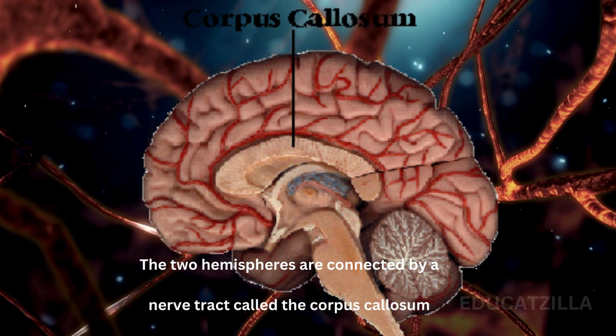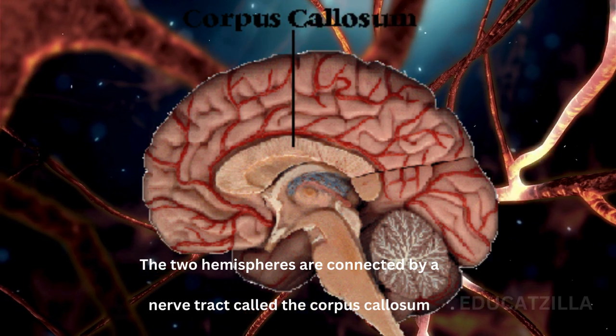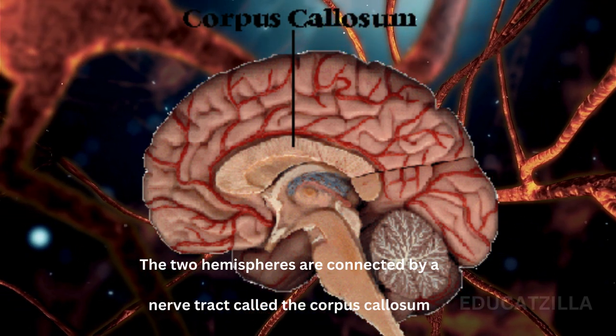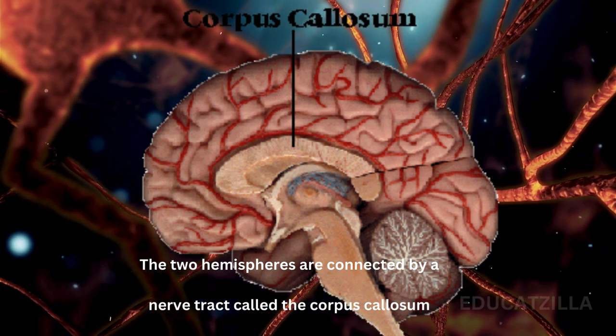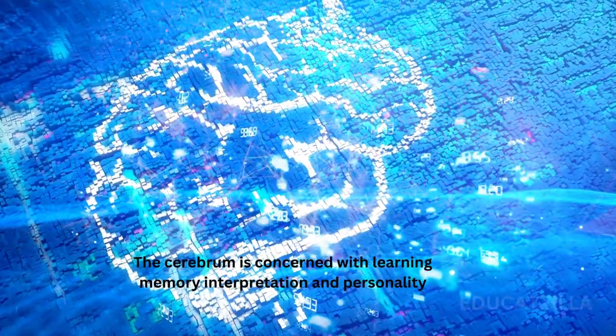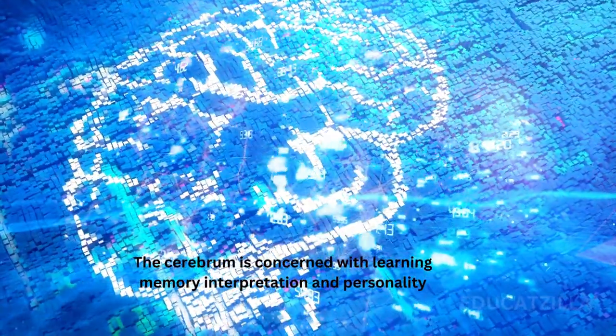The surface of the cerebral hemisphere is folded, which increases the surface area. The cerebrum is concerned with learning, memory, interpretation, and personality.